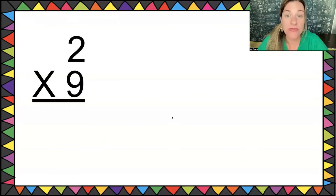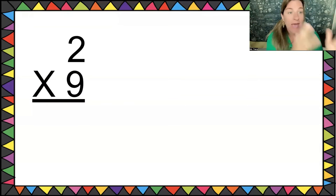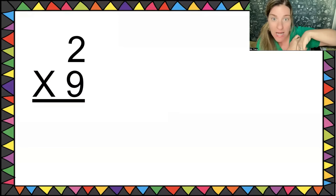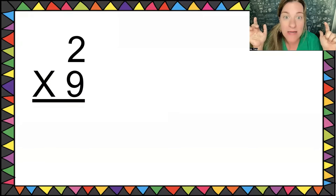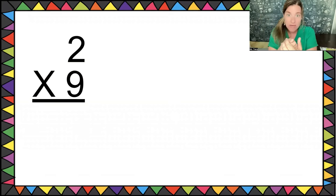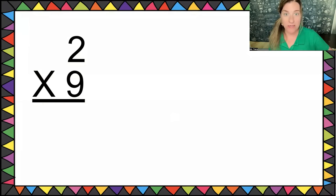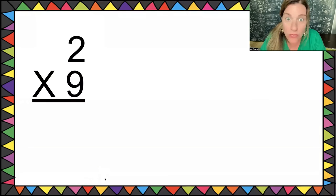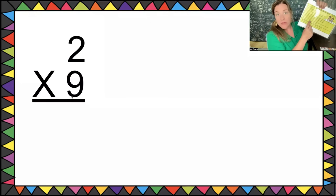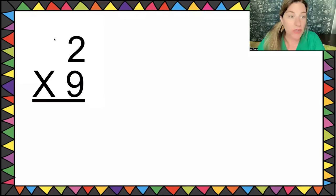If you get to two times nine and you're like, 'I don't know what that is,' you can ask yourself, what rule am I going to use? Not the nines rule — we haven't learned that yet. We'll use the twos rule because that's easier. Circle the nine — that's the base number. My magical list says two times any base number equals double the base number. Two times nine is exactly the same as nine plus nine.